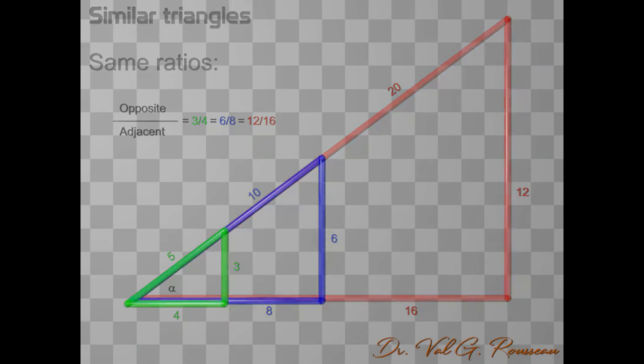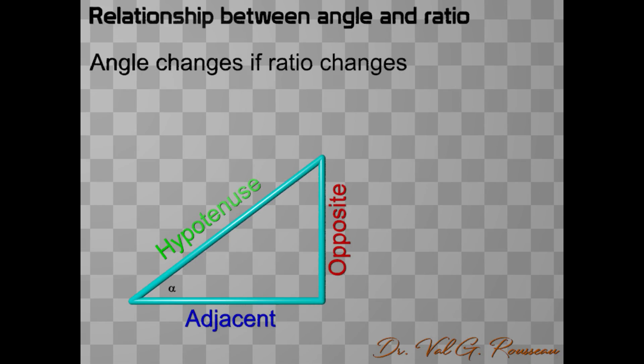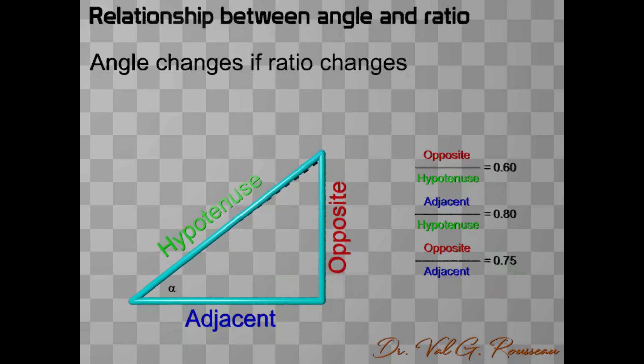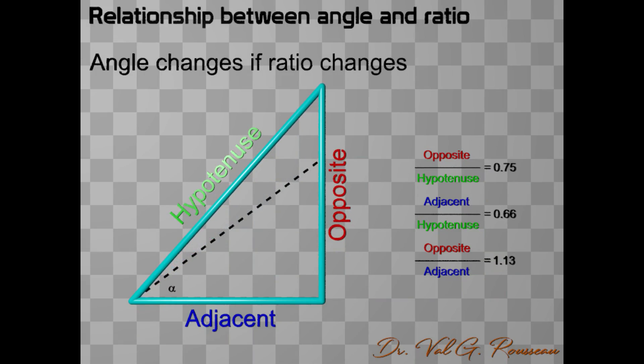Let us go back to our initial triangle with an adjacent side of 8 squares, an opposite side of 6 squares and a hypotenuse of 10 squares. This gives us the three following ratios. Let us now change the length of the opposite side to 9 squares and keep the adjacent side as it is.